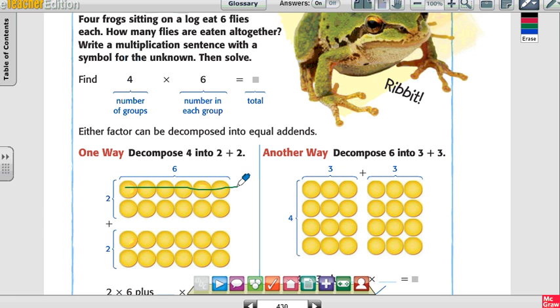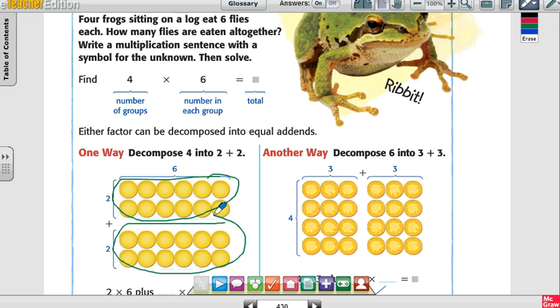1 group, 2, 3, 4. So what he did was he divided those groups, those 4 groups into 2 groups each. So now I have this group here and this group here. How many flies are eaten altogether? Write a multiplication sentence with a symbol for the unknown. So 4 times 6 equals, and then I need to find the total.